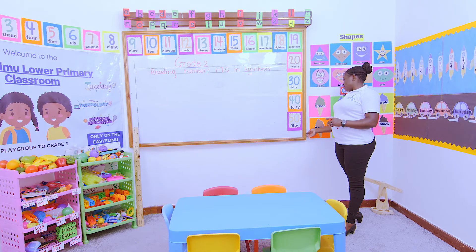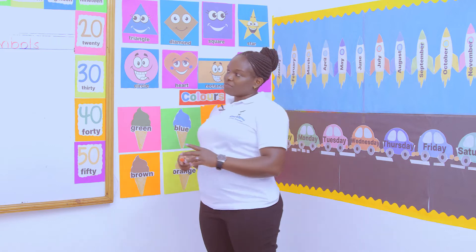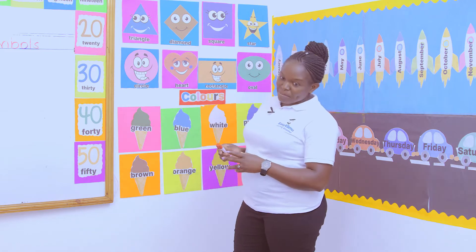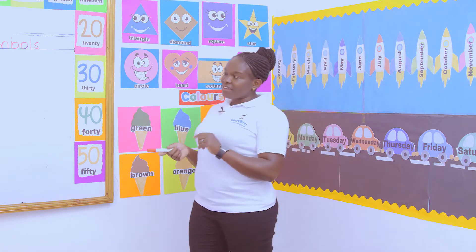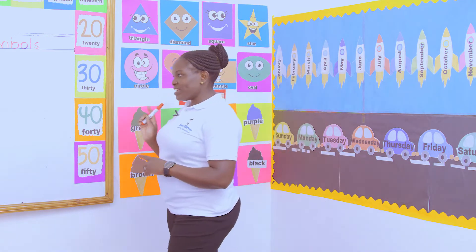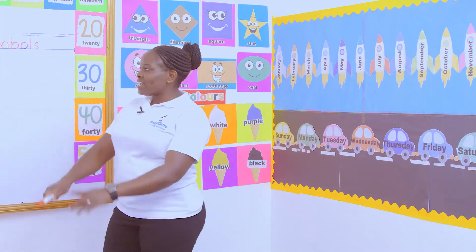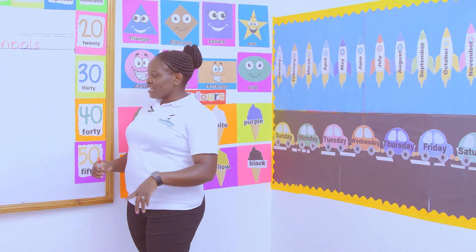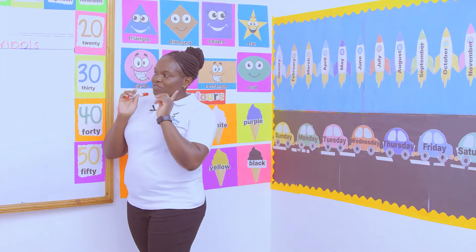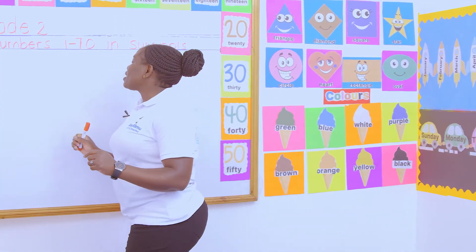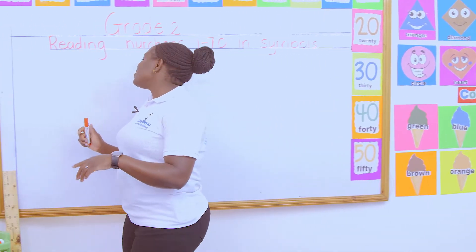Yesterday we did numbers — which numbers did we do? We did numbers 1 to 50. What about today? Today is our favorite day! We are adding 50, we are now counting from 50 onwards until we reach number 70.